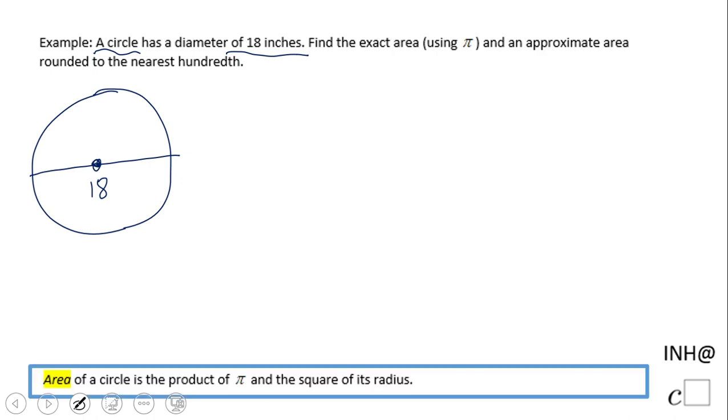Let's take a look at what we can do. Notice I have the definition for the area of a circle. The formula is the product of π and the square of its radius. The area of a circle equals πr².